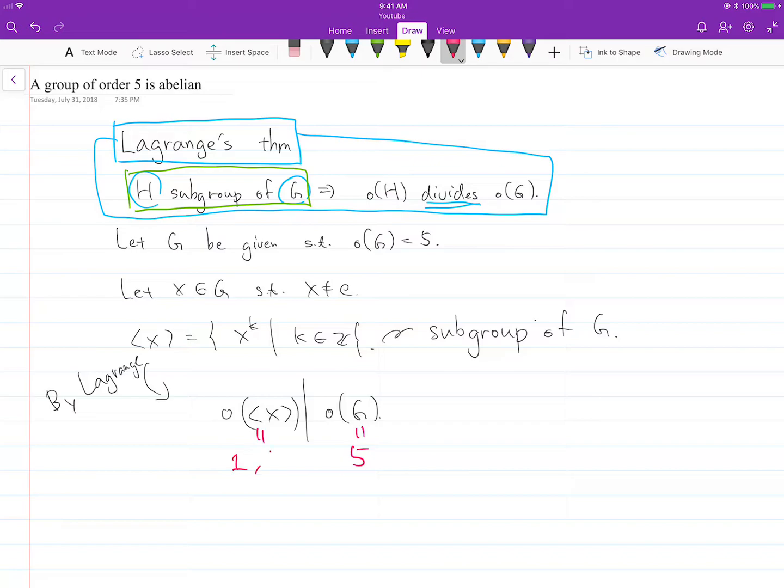That means the order has to be either 1 or 5, because the order has to be an integer. You can notice this can't be 1 because X is not the identity element.